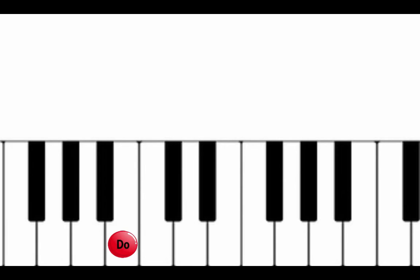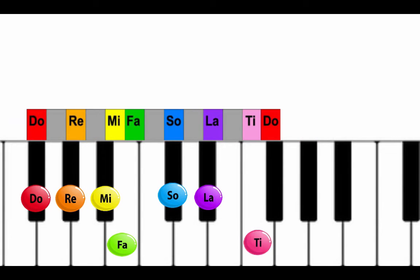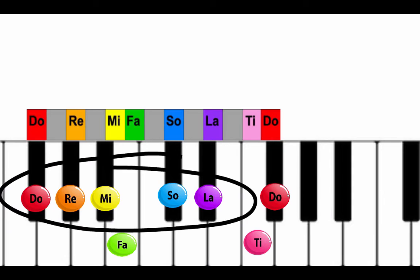Let's go up a fifth from B to F sharp major. This one's interesting — last time we had five sharps, so we'd expect six sharps, but we only see five black notes. Following letter order: F sharp, G sharp, A sharp, B, C sharp, D sharp, E sharp — that's the tricky one — and F sharp. This is also the key signature for G flat major: G flat, A flat, B flat, C flat, D flat, E flat, F, and G flat.